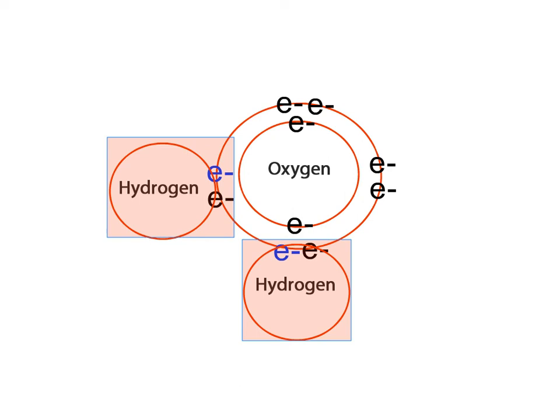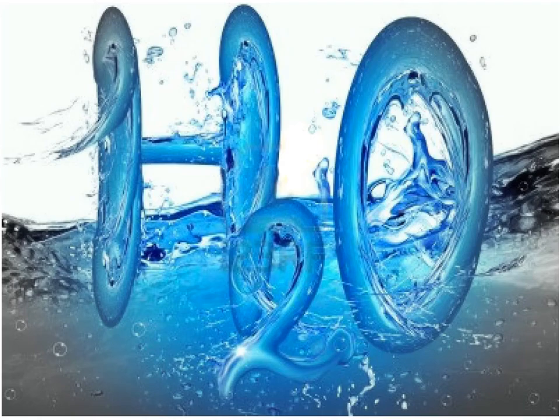The hydrogen atoms, in return, will share 1 of the oxygen electrons to become stable. This sharing of electrons between 2 hydrogen atoms and 1 oxygen atom forms a water molecule as indicated by the formula H2O.